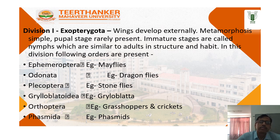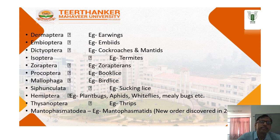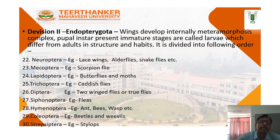In this division the following orders are present: Ephemeroptera, Odonata, Plecoptera, Grylloblattodea, Orthoptera, Phasmida, Dermaptera, Embioptera, Dictyoptera, Isoptera, Zoraptera, Psocoptera, Mallophaga, Siphunculata, Hemiptera, Thysanoptera, and Mantoptera.